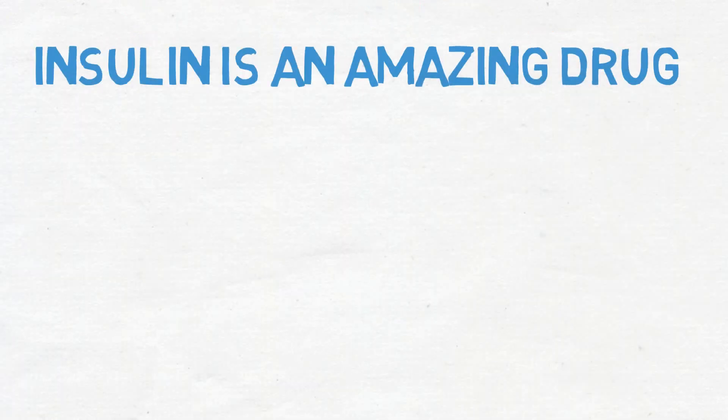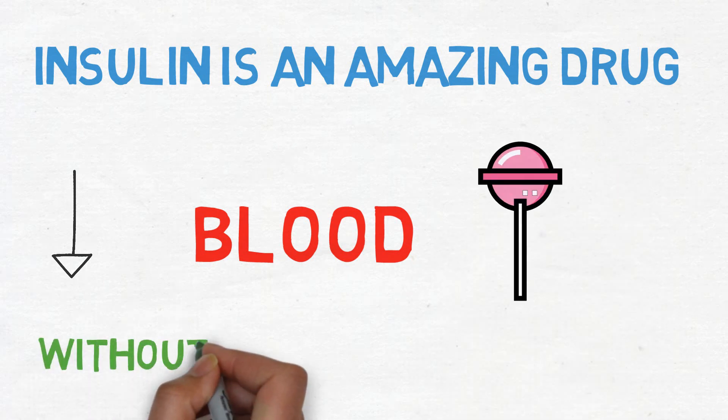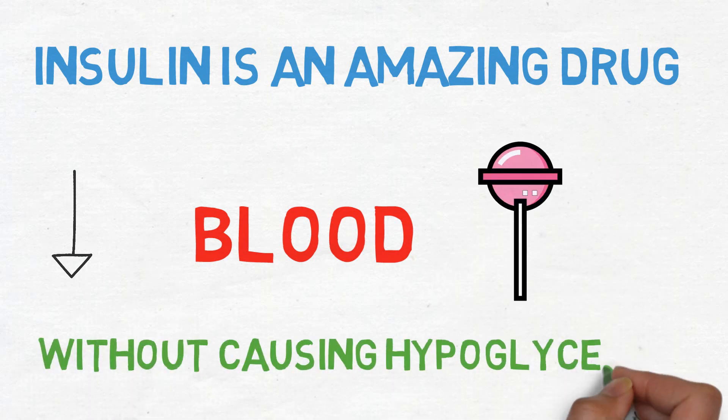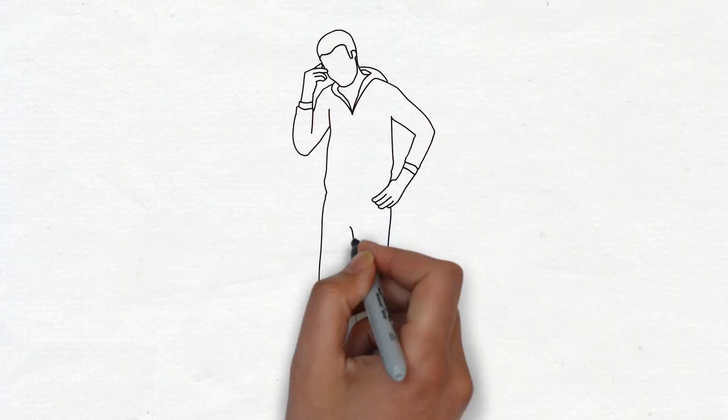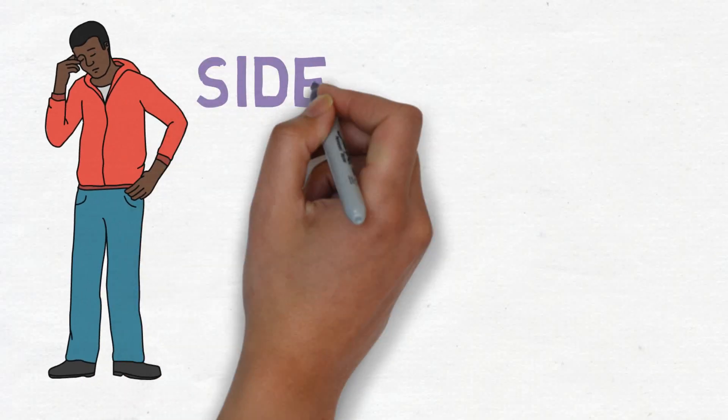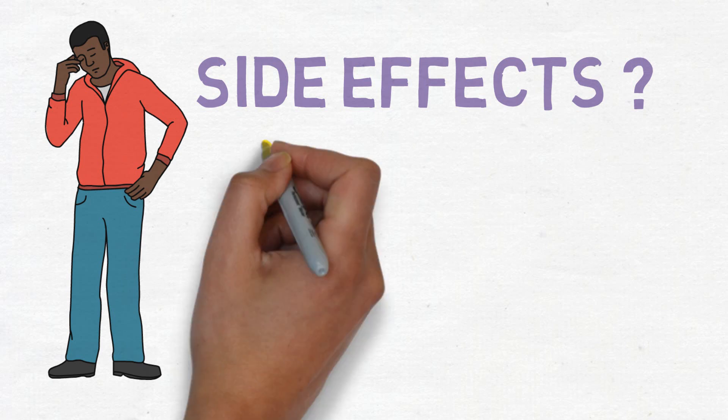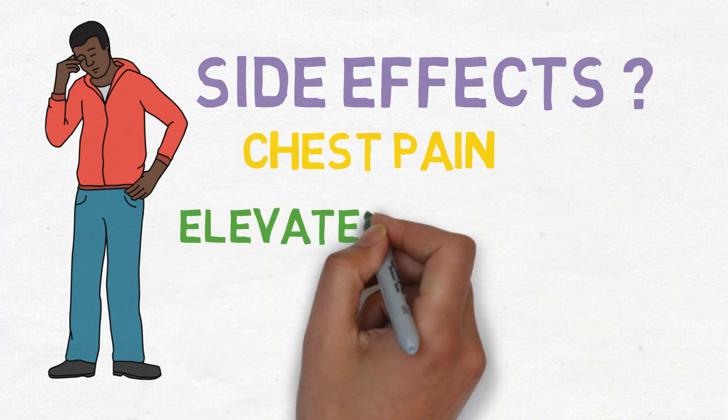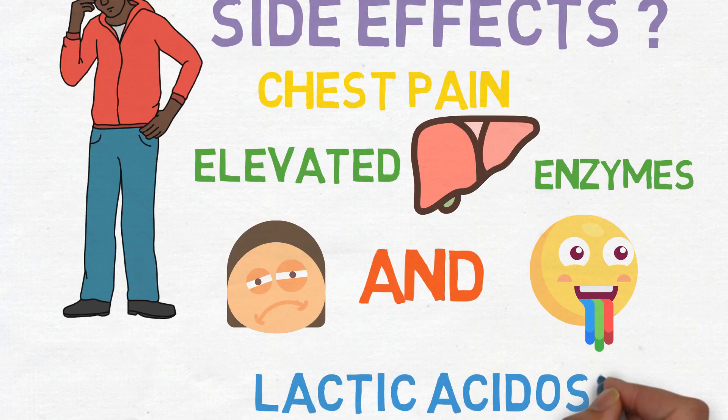Insulin is an amazing drug in the sense that it lowers blood glucose levels without causing hypoglycemia, but no medication is perfect. Metformin has some common side effects, some of which are chest pain, elevated hepatic enzymes, nausea, vomiting, and lactic acidosis.